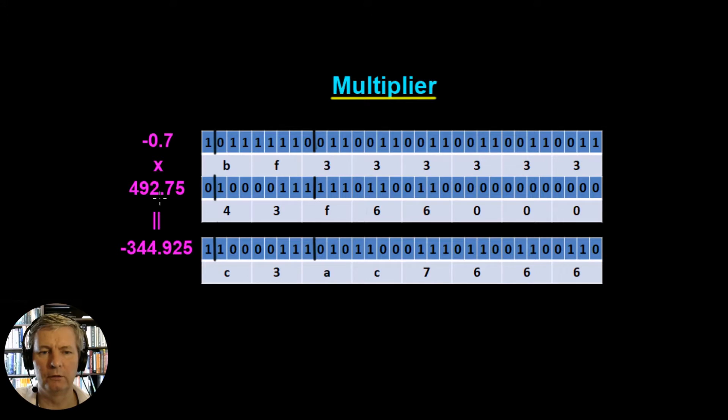I've done the same for the 492.75, and it's going to give us this number here. I've split them up as well so we can see that this one here is the sign. The next 8 bits are the exponent and the other 23 bits here are the mantissa. The answer is going to be this number down here.